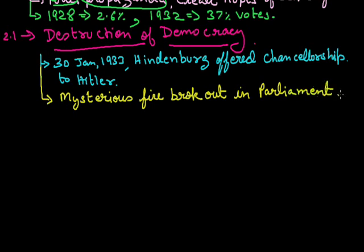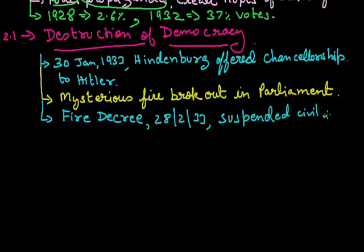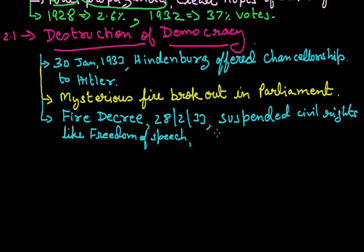A mysterious fire broke out in the Parliament of Germany, known as the Reichstag. Some have said that this was done by Hitler himself. Because there was now no Parliament to clear bills or administer the country, Hitler passed an ordinance known as the Fire Decree. This ordinance was introduced after the fire broke out in Parliament, and it was dated 28 February 1933. According to this act, he suspended all civil rights like freedom of speech, press, and the right to assemble — all these rights were now suspended in Germany.